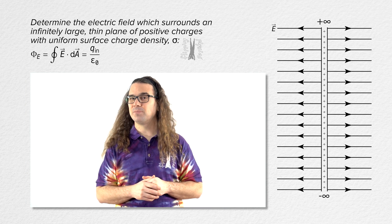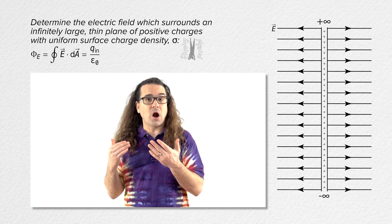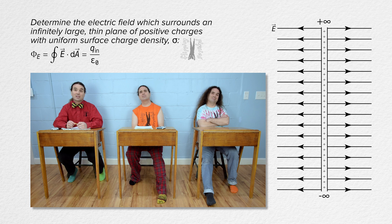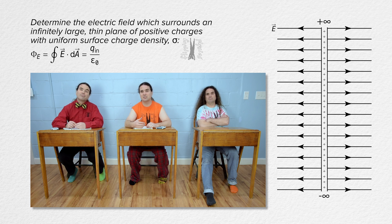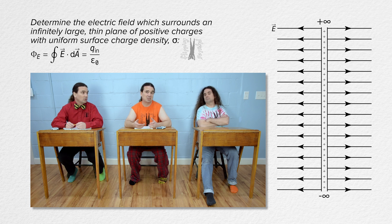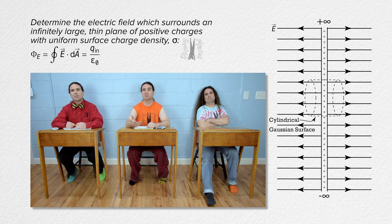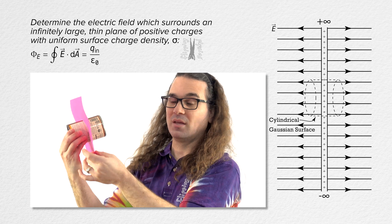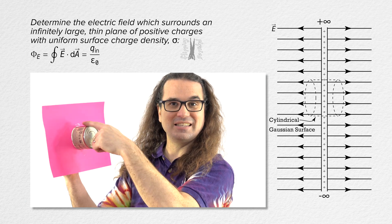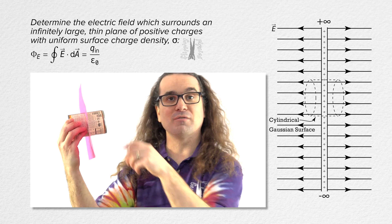Now that we have that figured out, Bobby, what shape shall we choose for our imaginary Gaussian surface? For the shape of the imaginary Gaussian surface, we are trying to make sure the electric field is either parallel or perpendicular to all the surfaces of the Gaussian surface. The electric field is always horizontal so the shape of the Gaussian surface needs to have sides which are vertical and horizontal. We can use a cylinder that has a horizontal axis and has its center on the plane of charges. Our charges are represented by this piece of paper and our Gaussian surface is represented by this can of soup. That is our visual representation.